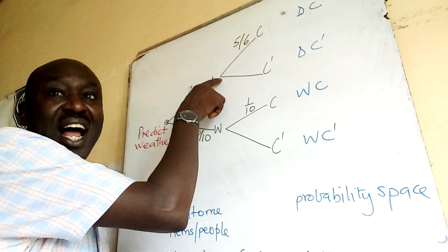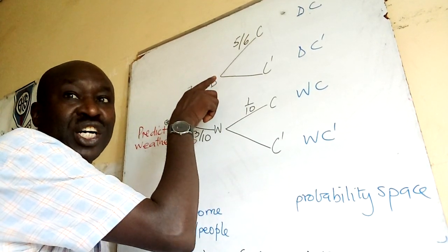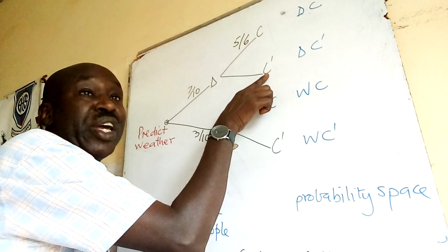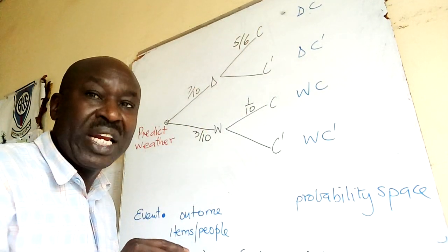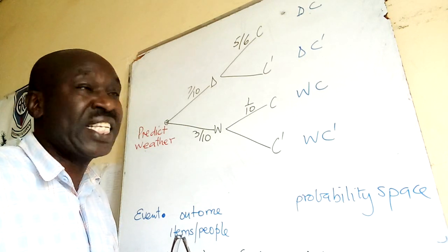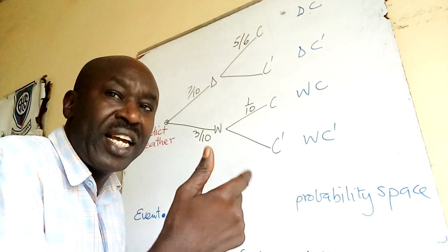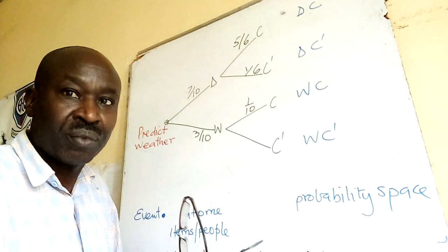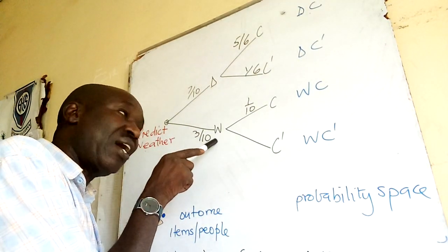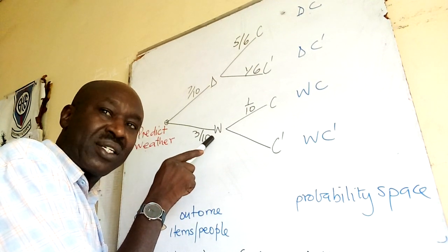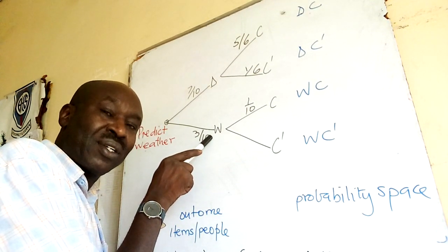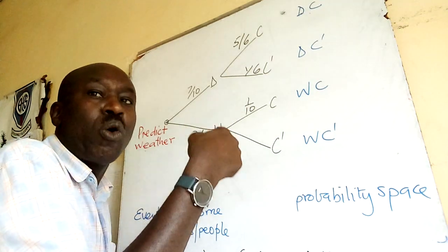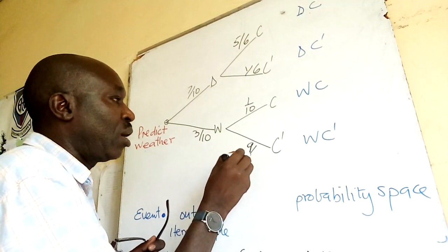Under dry conditions, there are chances the driver may complete or may not complete. If the probability of completing is 5 over 6, then the probability of failing to complete is 1 minus that, which gives 1 over 6. Under wet weather, the probability the driver completes is 1 over 10, so not completing will be 9 over 10.